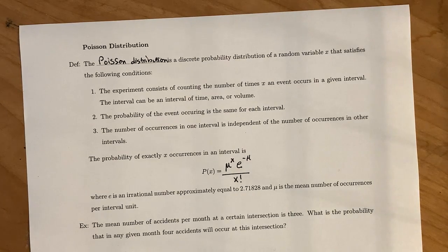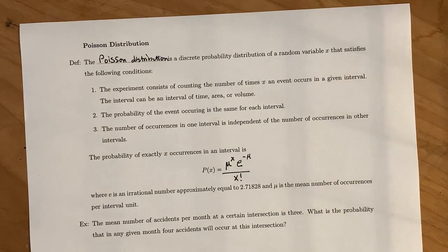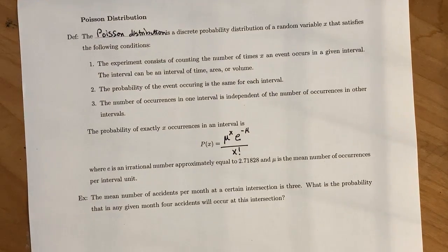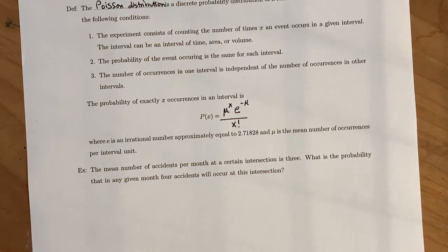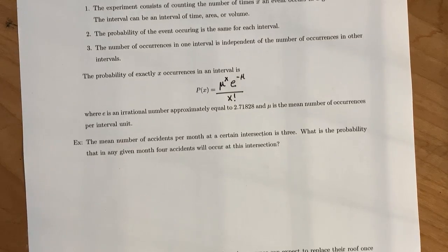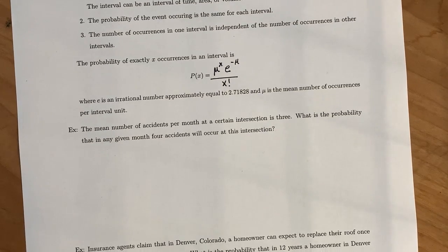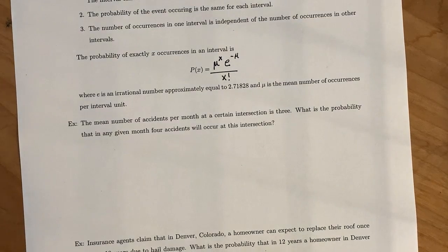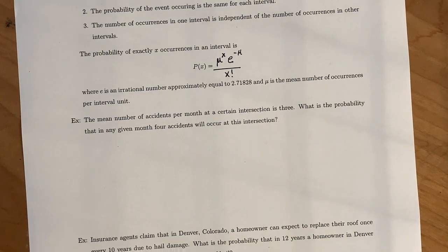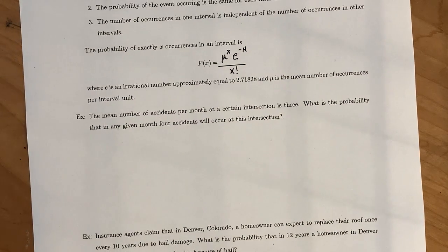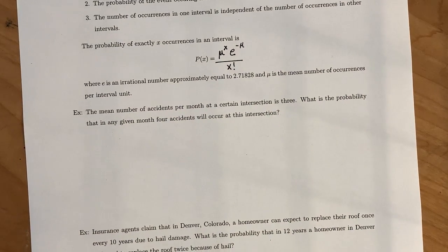Mu is going to be the mean number of occurrences per interval unit. That'll either be given to you in the problem, or there'll be enough information for you to solve for what mu is.